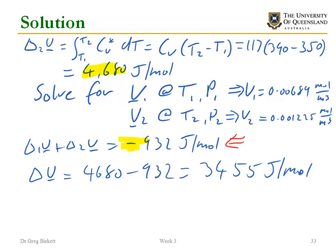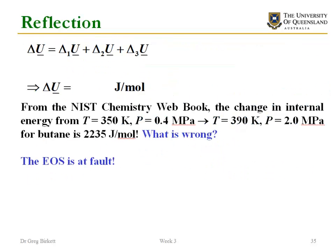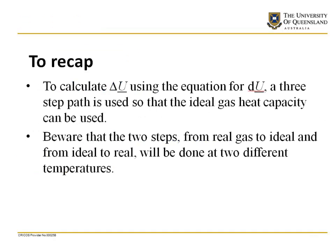Now if I compare this—my answer was 3455—to what NIST says. NIST says that my actual change in internal energy from condition 1 to condition 2 is 2235 joules per mole. Then I've obviously done something wrong. Well, not quite. What is wrong is that the equation of state is at fault. It's a very simple equation of state. It's a reasonable attempt for 1873 by van der Waals, but it does a poor job of approximating this data. So beware. Always use the equation of state that gives you the accuracy that you're after. If I was seriously interested in this system, I'd be using something else besides the van der Waals equation of state.